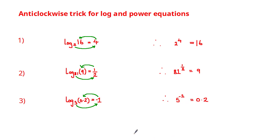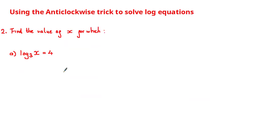This anti-clockwise trick is very useful for quickly converting between log and power equations, but more importantly the relationship between log and power equations helps us solve other problems. The next problem we're going to look at is solving logarithmic equations using this relationship. In this question we've been asked to find the value of x for which log base 3 of x is equal to 4.